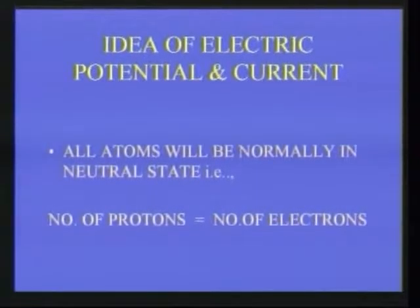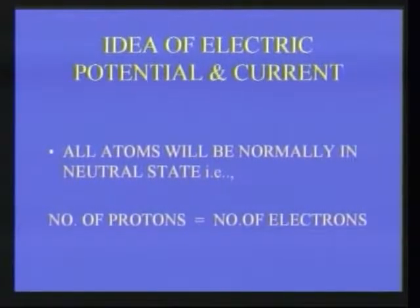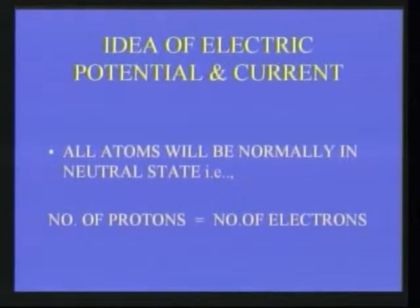After defining conductors, insulators and semiconductors, now let us see the idea of electric potential and current. All atoms are normally in a neutral state — the number of protons is exactly equal to the number of electrons. So an atom will not have any electric charge on it. Protons carry positive charge and electrons carry negative charge; since their numbers are equal, the charges cancel out and the atom is in a neutral state.